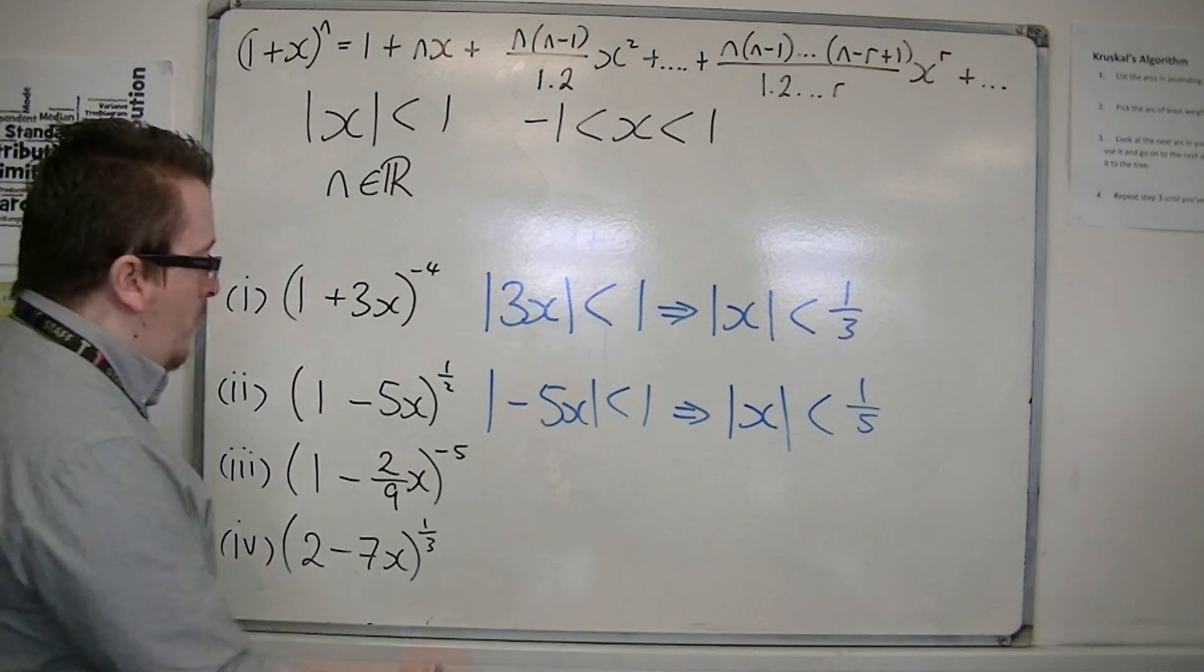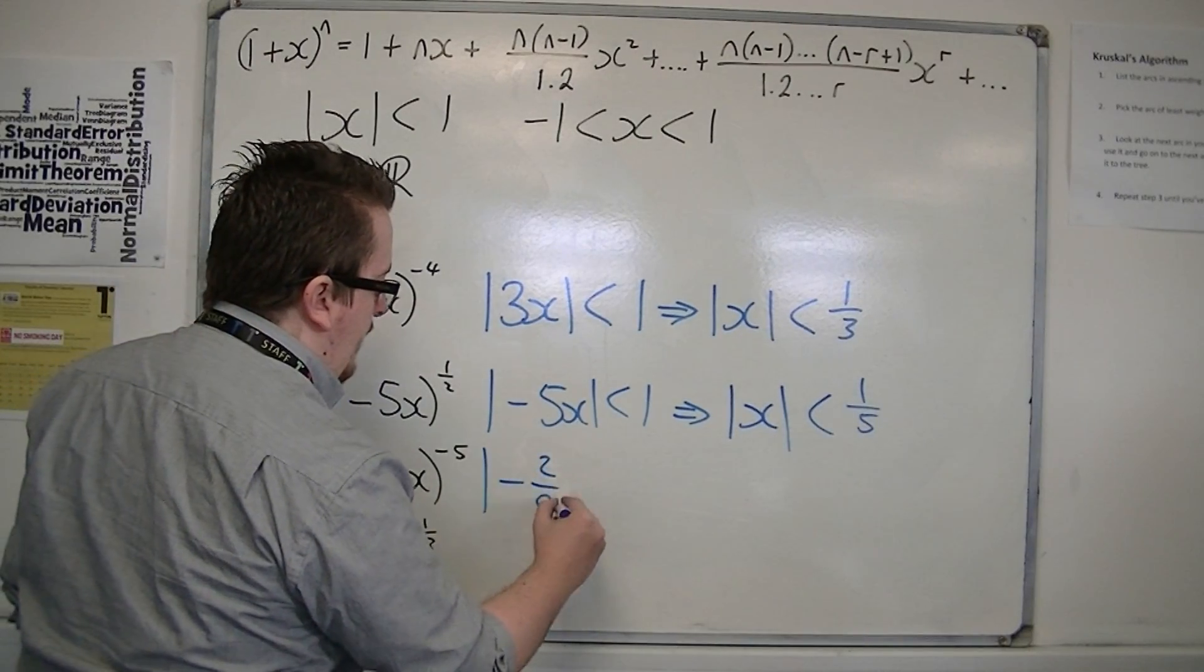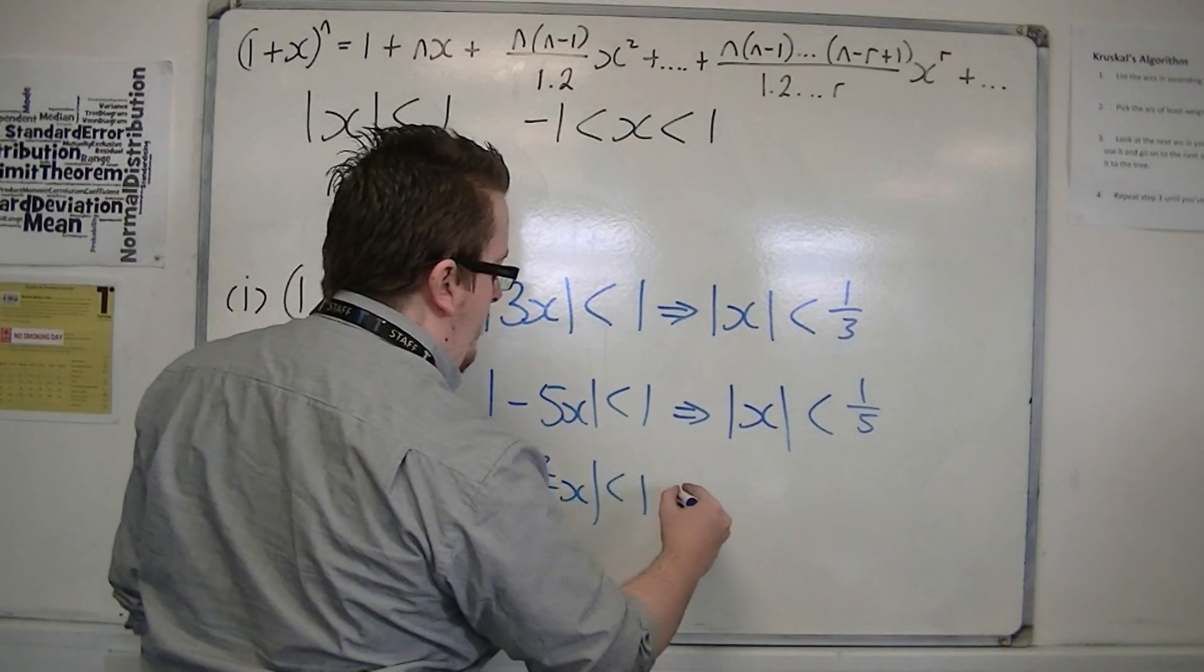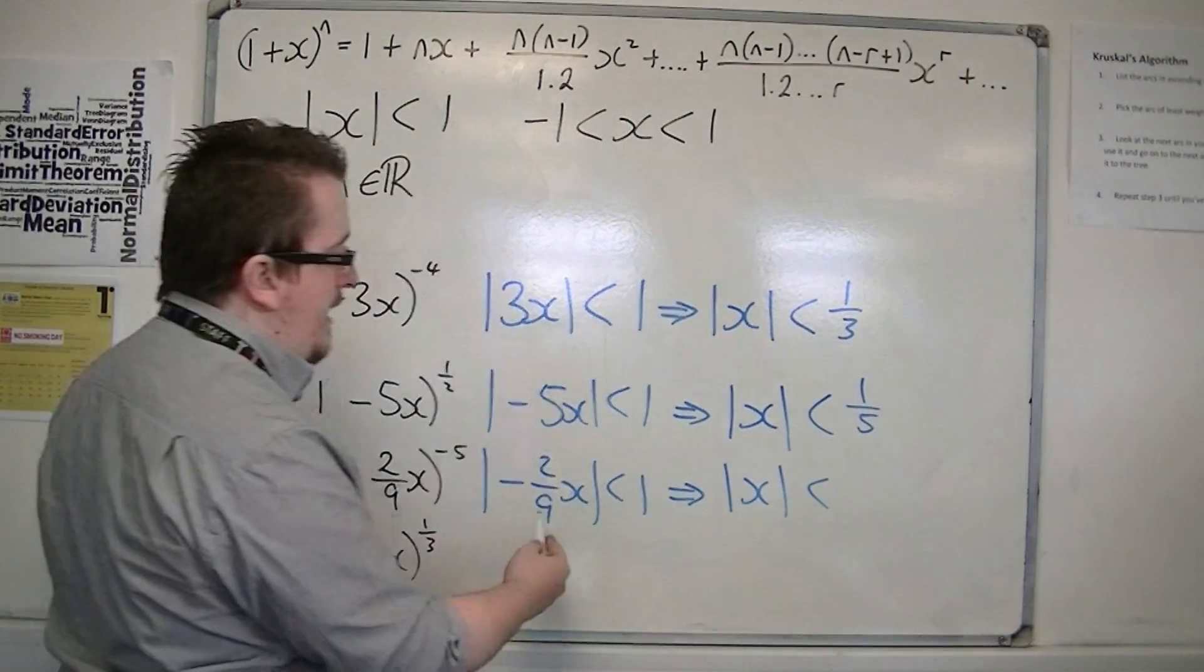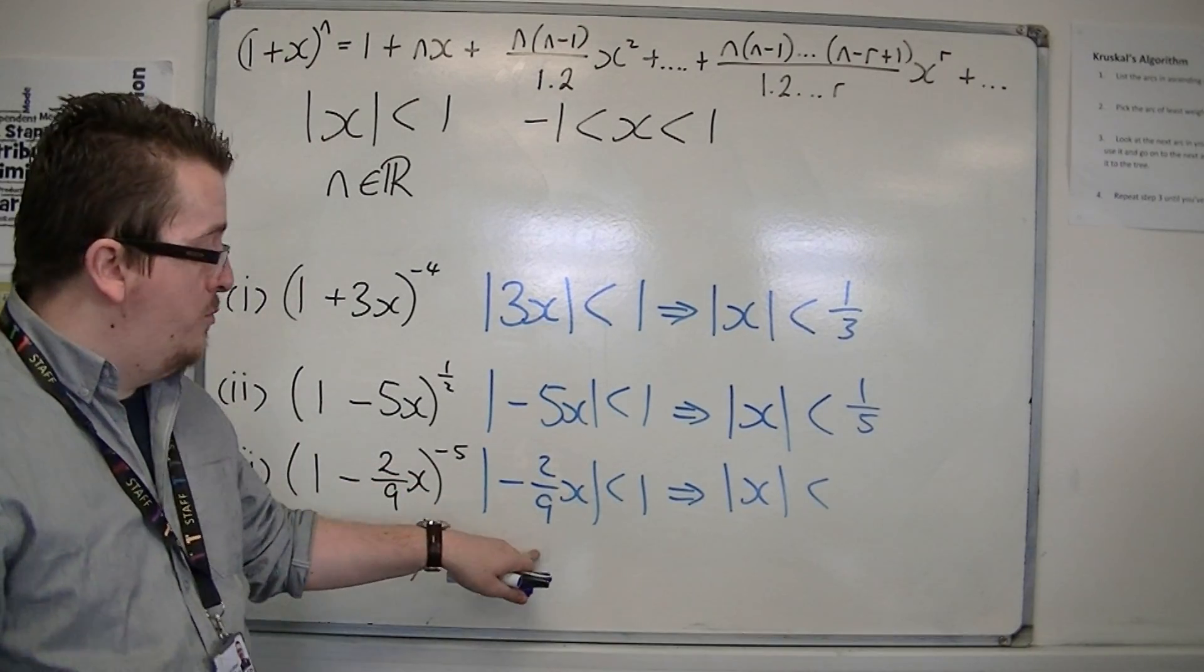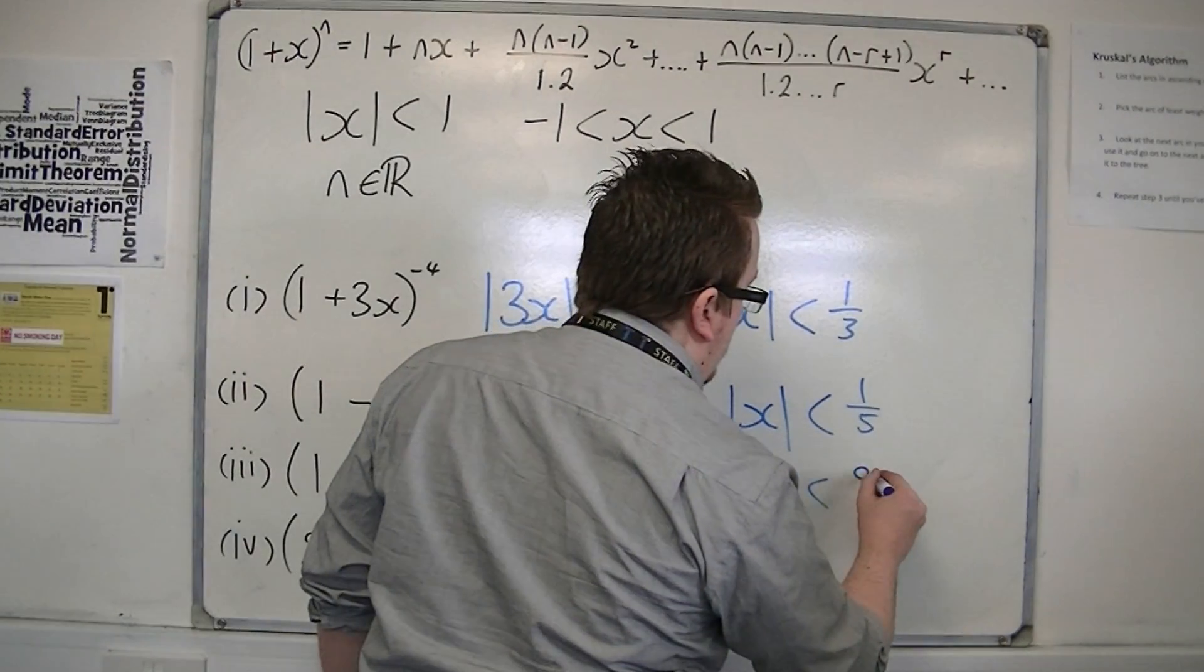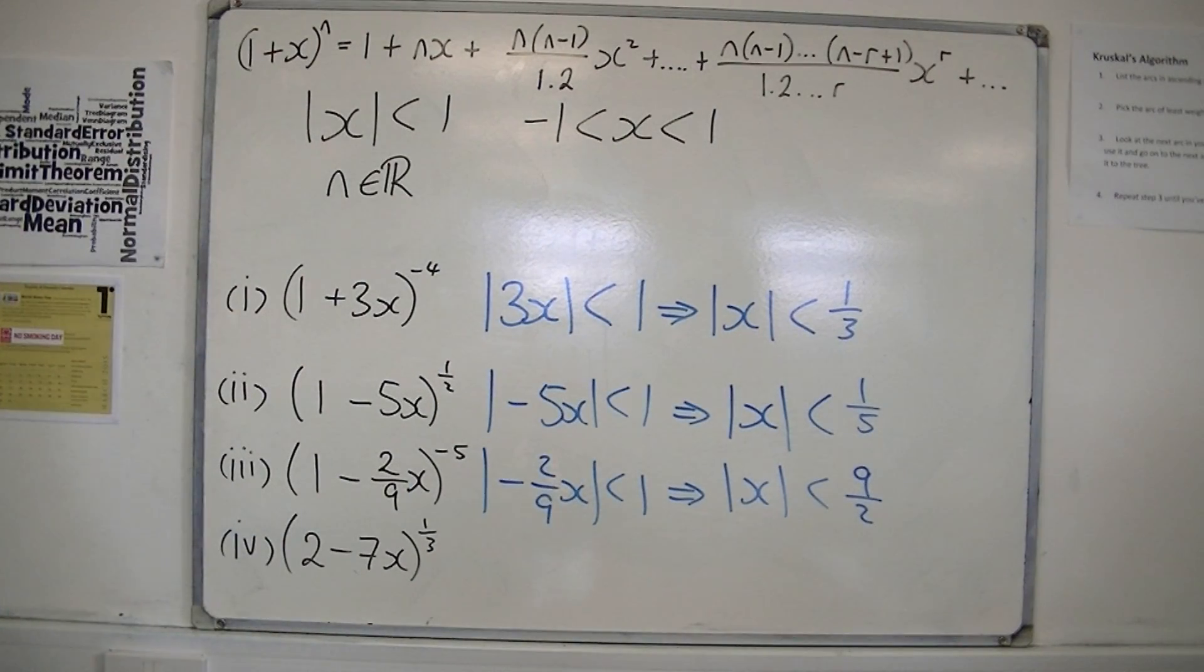For this third example, replace the x with minus 2 ninths x is less than 1. The modular sign will take care of the negative, and I can divide both sides by 2 ninths. So, I get mod x must be less than 9 halves in order to be valid.